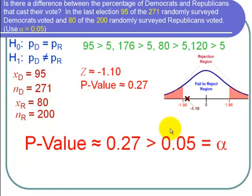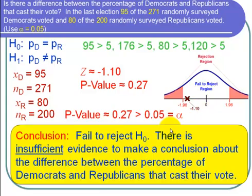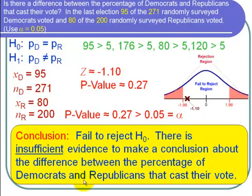Now let's state our conclusion. We failed to reject the null hypothesis. There is insufficient evidence to make a conclusion about the difference between the percentage of Democrats and Republicans that cast their vote.